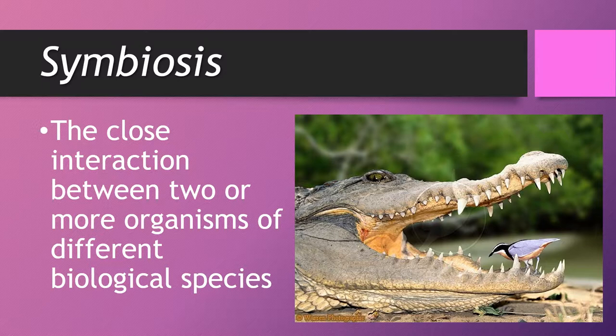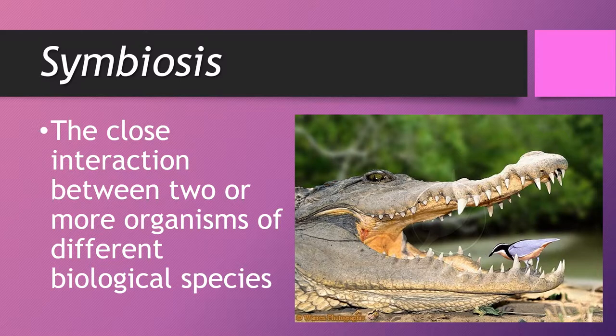Then we have symbiosis, which is the close interaction between two or more organisms of different biological species. For example, we have a bird picking out little specks of food caught in a crocodile's teeth. The crocodile allows this — it's getting a dental checkup and the bird is getting a free meal. This is an example of symbiosis called mutualism.